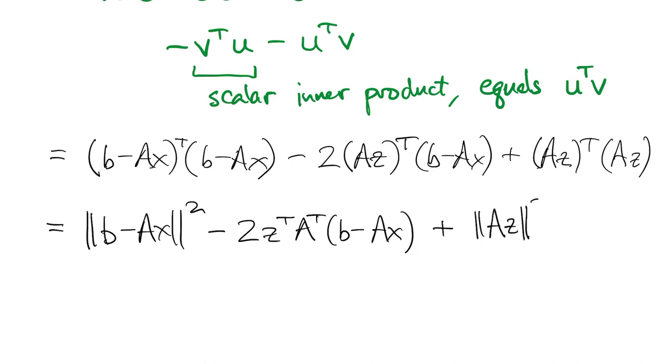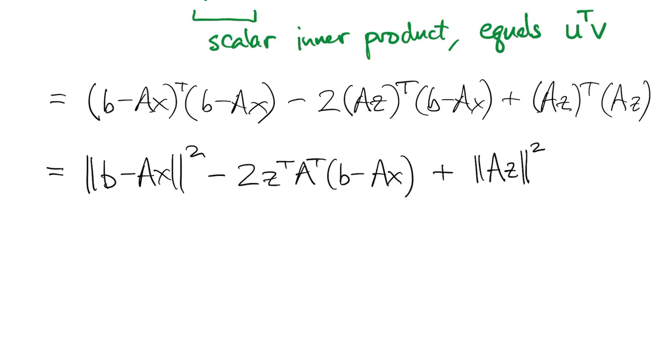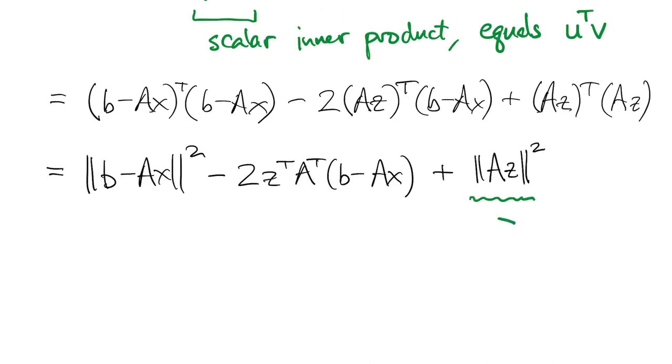And the last term is the two-norm of a times z squared. Now this being the norm of a vector squared, we know it's always greater than or equal to zero.